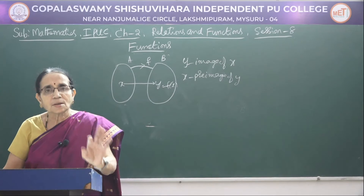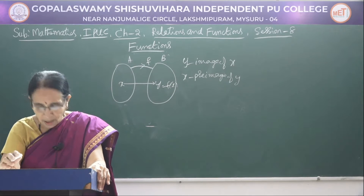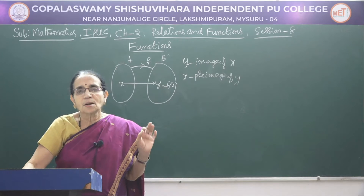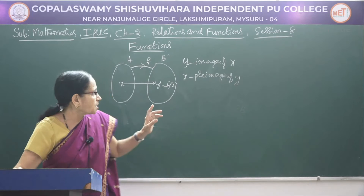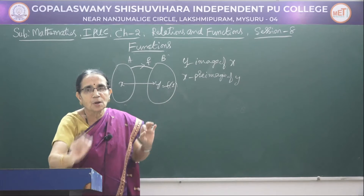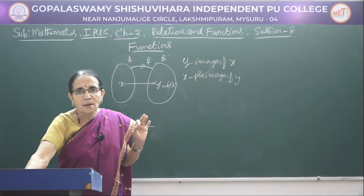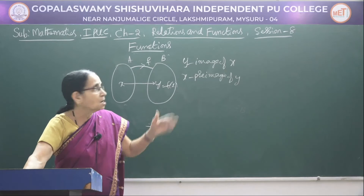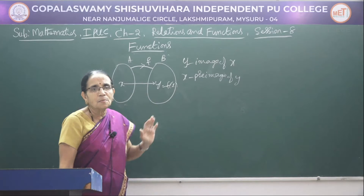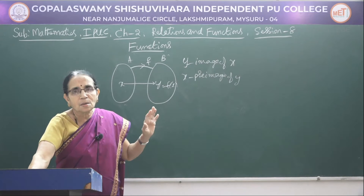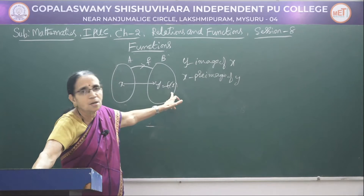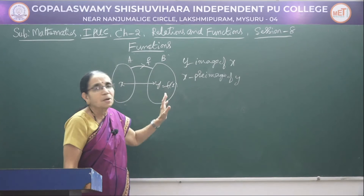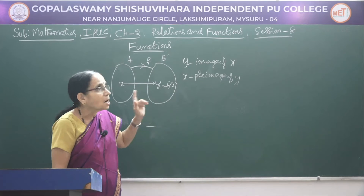A function is a rule: let A and B be two non-empty sets. A function F from A to B is a rule which associates each and every element belonging to the first set A with a unique element belonging to the second set. We write it as F: A → B, and read it as 'F is a function from A to B.' If x belonging to the first set is associated with y belonging to the second set under function F, then we say y is the image of x and x is the pre-image of y under F.